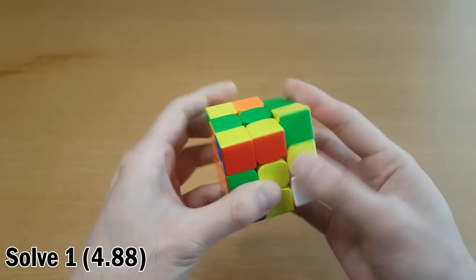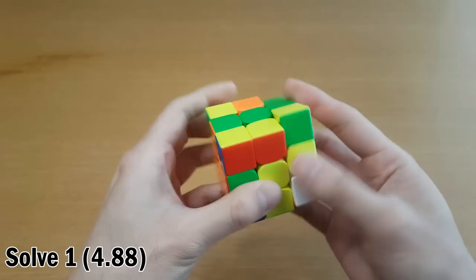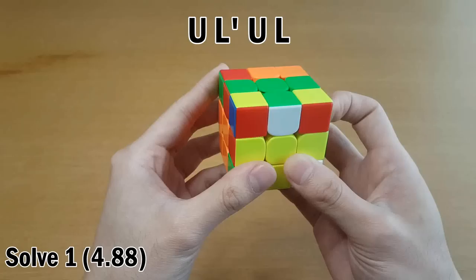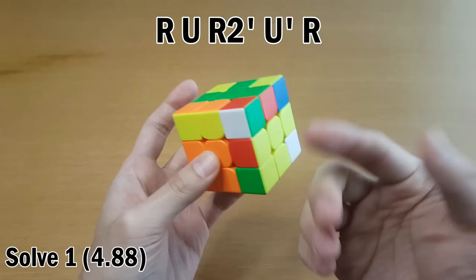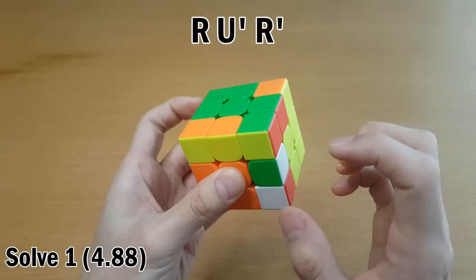From here, the fastest pair to solve is red-yellow, which is like that, and then insert. But Max solves the yellow-orange one first, and he pairs them up like this and takes them out. Now here, he does something really smart, and see if you can find it. Instead of inserting this pair, he just solves this pair first, because this is a great five-move pair, and if you insert this one, you end up with a much worse case. So he just solves this first, and then he can just insert this one.